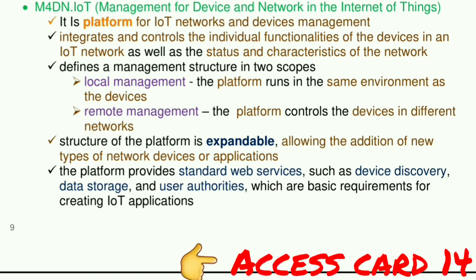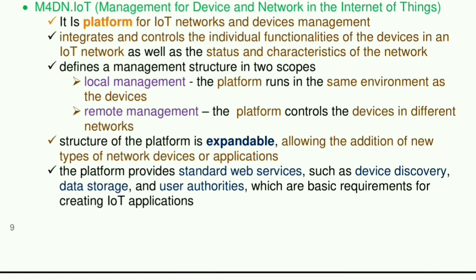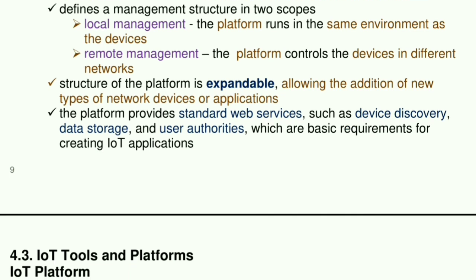M4DN defines a management structure in two scopes: local management, where the platform runs in the same environment as the devices, and remote management, where the platform controls devices in different networks. The structure of the platform is expandable, allowing the addition of new types of network devices or applications. The platform provides standard web services such as device discovery, data storage, and user authorities, which are basic requirements for creating IoT applications.